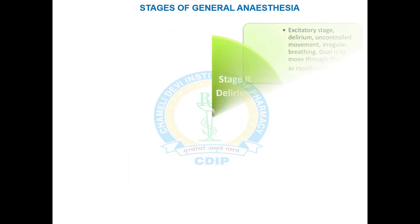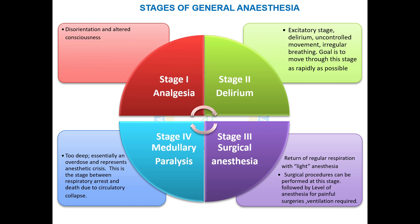If we talk about the stages of general anaesthesia, there are four stages. Stage 1 is analgesia, in which loss of pain sensation takes place along with disorientation and altered consciousness. Stage 2 is the delirium stage, which comprises the excitatory stage where uncontrolled body movements take place along with irregular breathing.